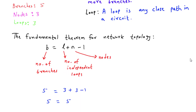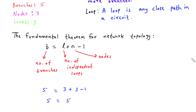Now let's explore the branch, loop, and node relation equation, which is B equals L plus N minus 1. This equation establishes a relationship between the number of branches (B), the number of loops (L), and the number of nodes (N) in a circuit. It states that the total number of branches is equal to the sum of the number of loops and the number of nodes, minus 1. The subtraction of 1 accounts for the reference or ground node in the circuit.